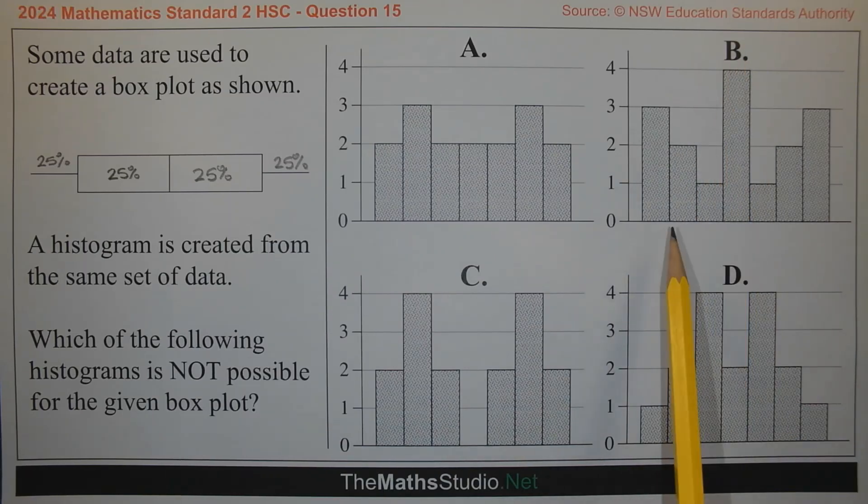Same thing with option B. We see a concentration of data here and here which corresponds to the tails.